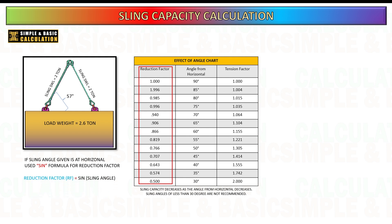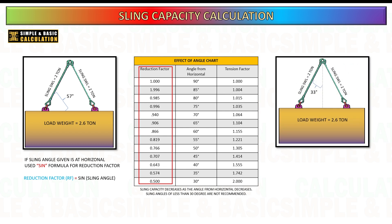Remember this for calculating the reduction factor: if the angle is given at horizontal, use the sine method, and if the sling angle is given at the vertical line, use the cosine method.